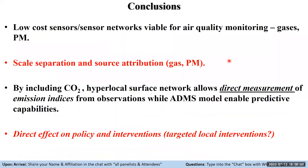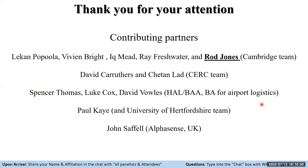In summary, we've shown that local sensors and sensor networks are viable for air quality monitoring for both gases and PM. By making high temporal resolution and high-density sensor network measurements, we can do scale separation and source attribution studies. One novelty is that by including CO2, we can begin to do direct measurement of emission indices. The model gives us good predictive capability for air quality. Finally, the work and information from this kind of analysis has big implications for policy and intervention — by looking at very local signals, you can have very targeted policies that effect changes in local emissions, which is key to addressing air quality problems. I'd like to thank you for your attention and acknowledge the different partners who contributed to this work, and the head of my group, Rod Jones.